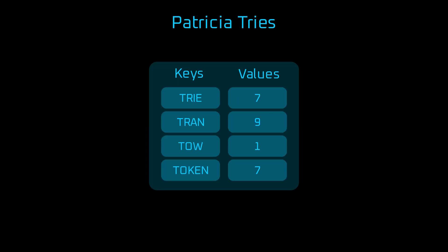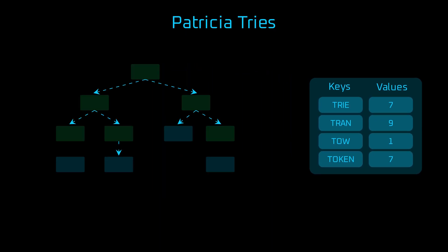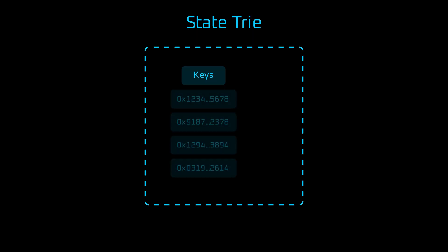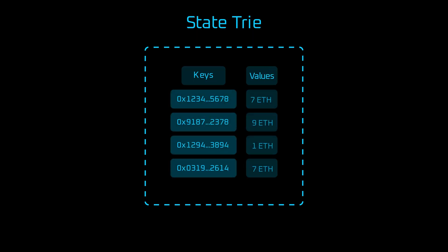In a Patricia trie, each leaf represents two pieces of data: the key and the value. Patricia tries take advantage of common prefixes to reduce the tree size and enable efficient lookups. The nodes are indexed along the path of the trie with key suffixes, and the leaf node stores the final suffix and value. One of the Patricia tries used in Ethereum is the state trie, which stores the account address as a key and account balance as one of the values.